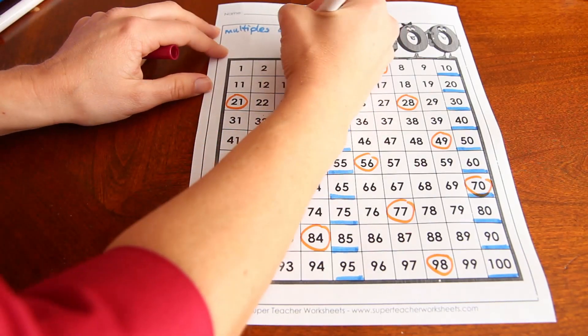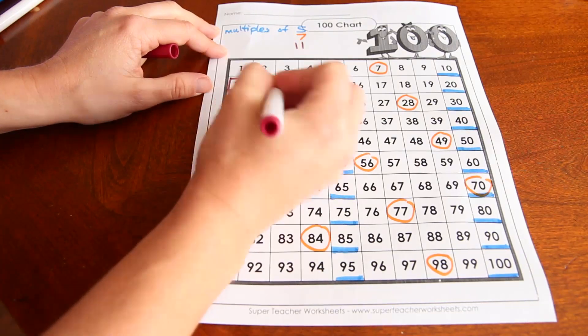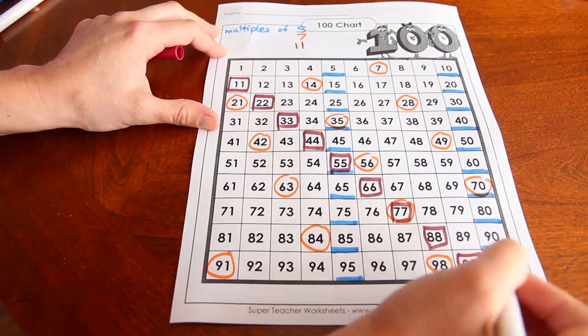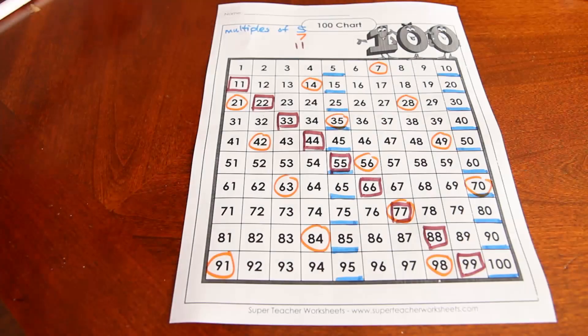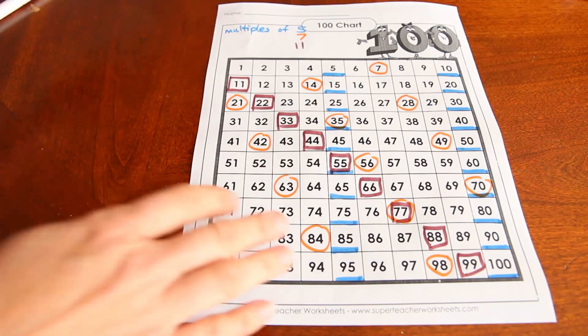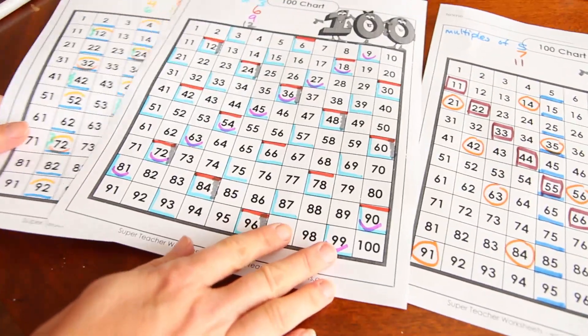Then we do 11s. So with all of these charts, we can see the different multiples of the numbers.